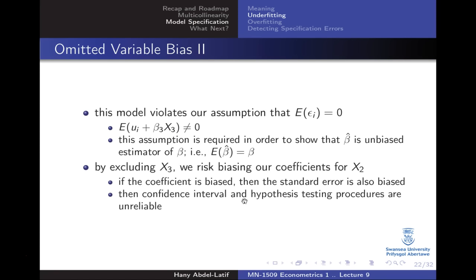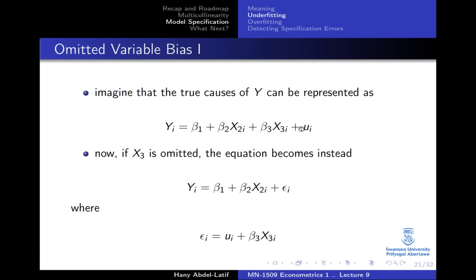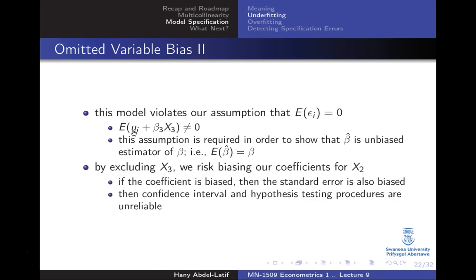One of the main assumptions of the classical linear regression model is that the expected value of the error term should equal zero — the error term on average should be zero. If the expected value of u_i equals zero, obviously the expected value of the new error term epsilon_i will not be zero.